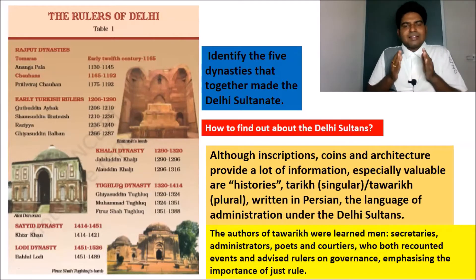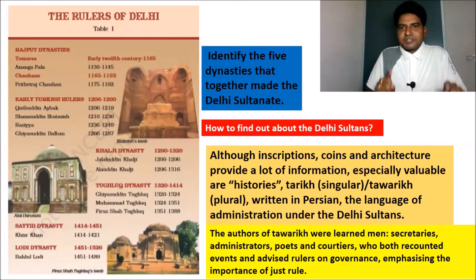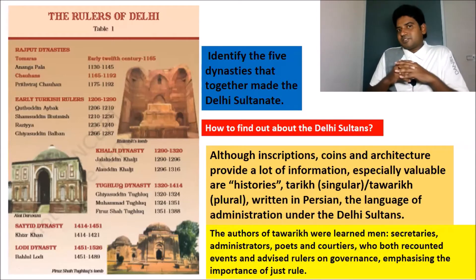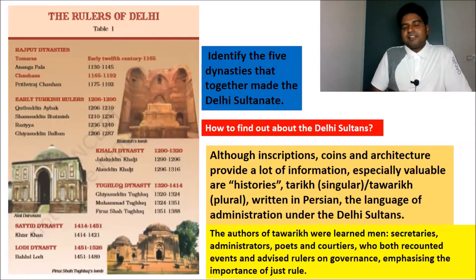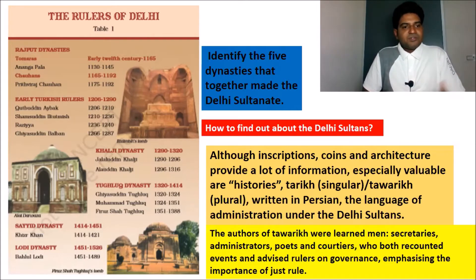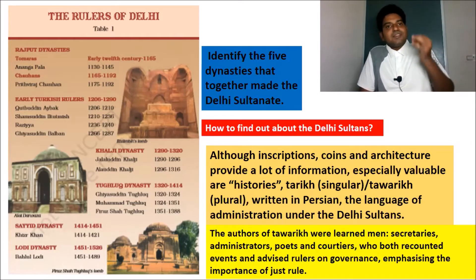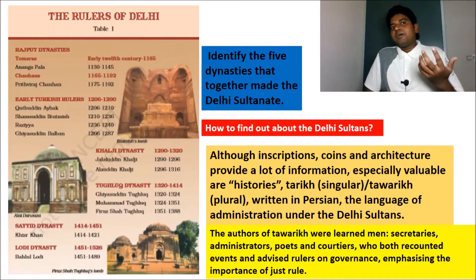What are the sources that we have to know about the rulers of Delhi Sultanate? First, as we all know, the inscriptions — those on the walls of temples and on the walls of any major constructions — are a major source of information about Delhi Sultans. Next, the important sources are coins and architecture. The magnificent constructions, as you can see on the screen, include tombs, Buland Darwazas, and Firuz Tughlaq's fort — coins, inscriptions, and architecture are the major sources.